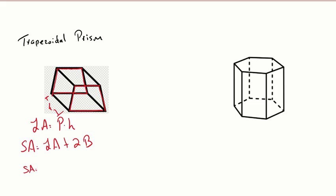Substituting in what we know: lateral area equals perimeter times height of the prism, plus two times the area of the base. If you don't remember the area of a trapezoid, we need the height of the trapezoid. The area formula is: base one plus base two, divided by two, times the height of the base.